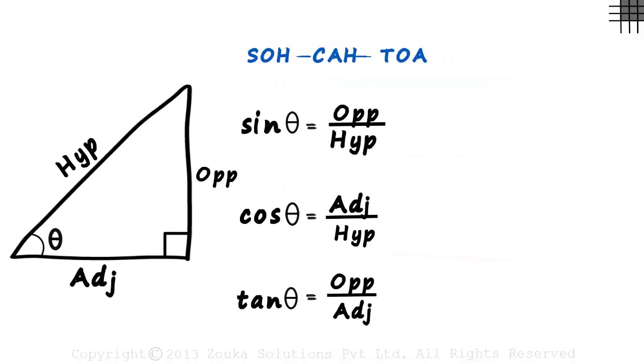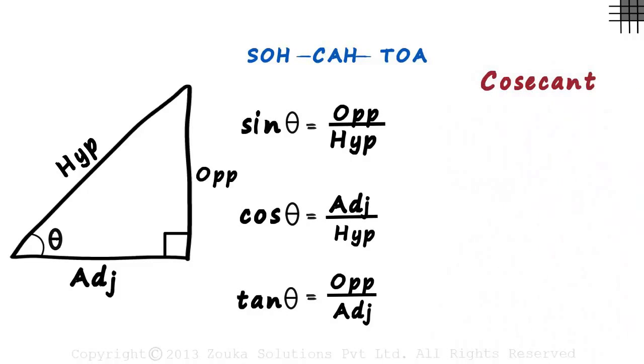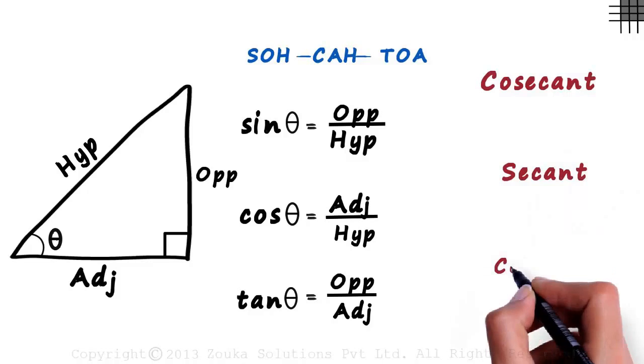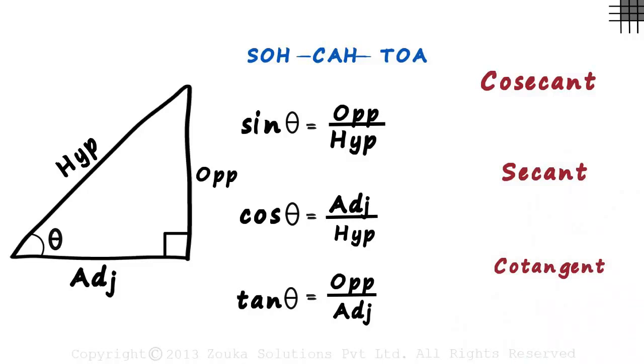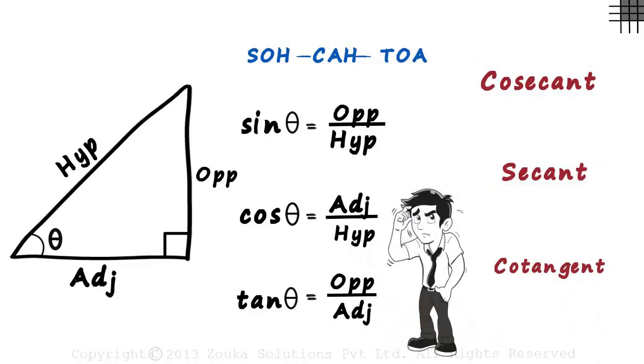The name of the fourth function is cosecant. The fifth function is secant and the sixth one is cotangent. The funniest part about these names is that none of them gives us the slightest hint of what they mean.